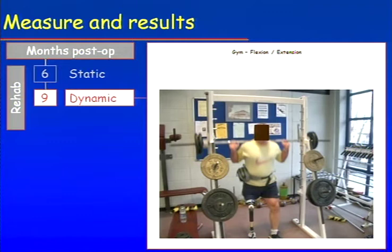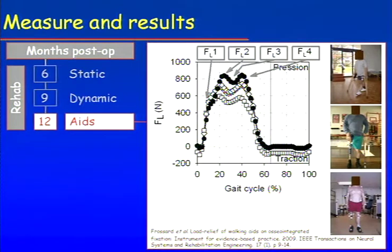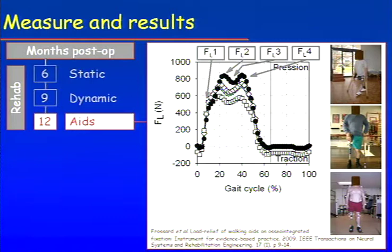The next step is to use walking aids. Amputees are sometimes prescribed walking aids as load relief and safety devices, even though they can perfectly walk without them in most cases. We've done measurements with three different types of walking aids: two crutches, one cane, and no walking aid. This gives us an idea of the actual load relief that occurs when using walking aids.